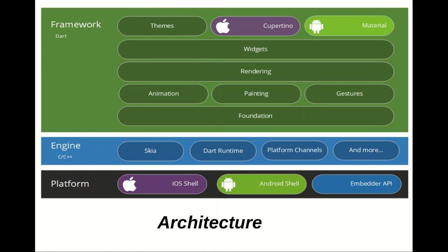Flutter's architecture is layered in three layers: first is the Dart layer at the top, then C/C++, then the platform layer. They have provided themes for convenient use, and the Cupertino layer contains iOS-specific widgets, while the Material layer contains Android-specific widgets. Within widgets there are stateful and stateless widgets. Stateful widgets change dynamically — like the counter incrementing when the plus button is clicked. Stateless widgets have no change regardless of interaction; they are static.